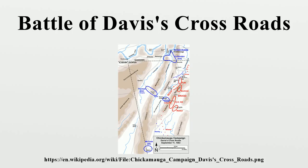After his abortive attempt to attack one isolated Union corps, Bragg turned his attention to the corps to his north, the XXI Corps under Maj. Gen. Thomas L. Crittenden, setting the stage for the bloody Battle of Chickamauga on September 19.